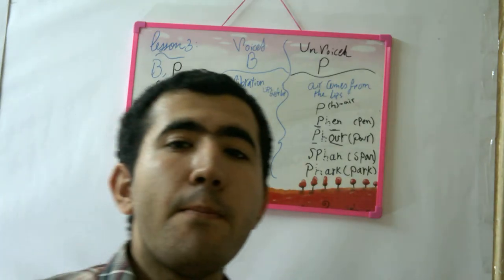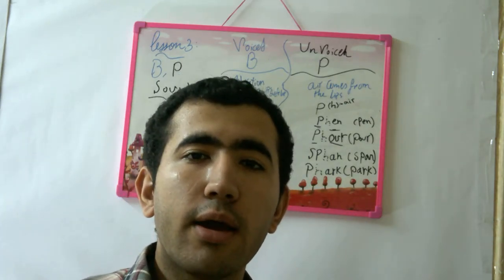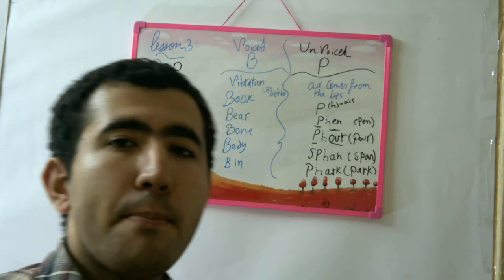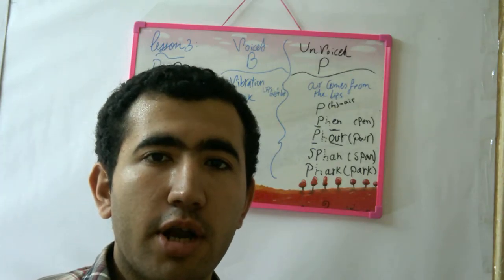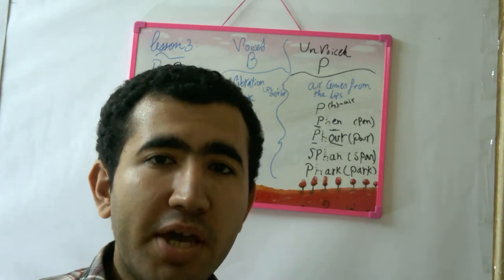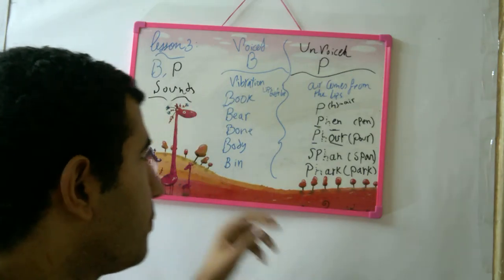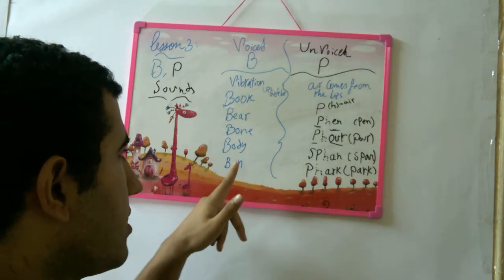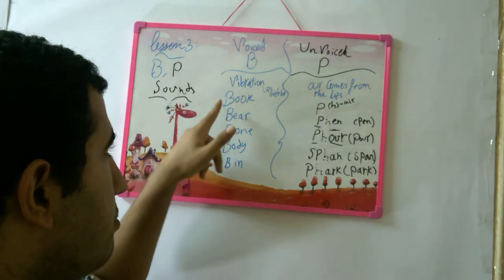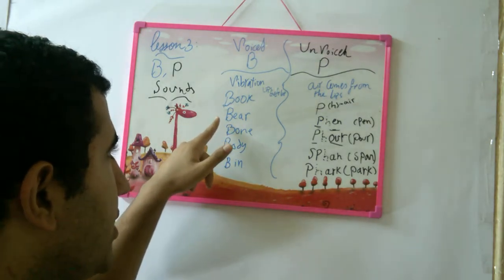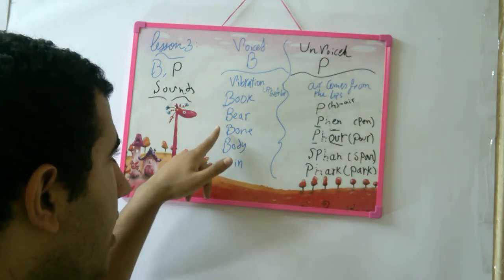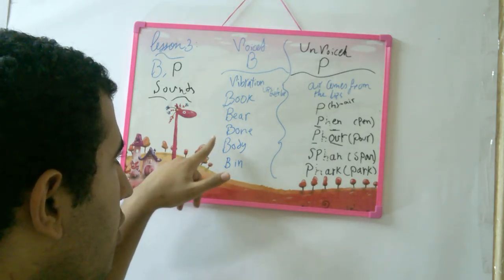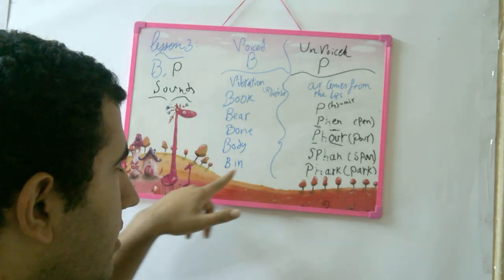So I'm going to say: book, book, beer, beer, boon, body, bin. Book, beer, boon, body, bin. Book, beer, boon, body, bin.